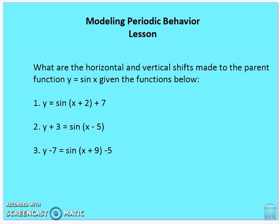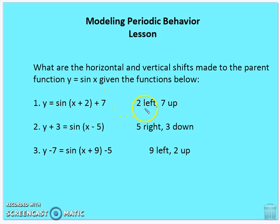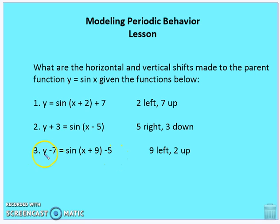I'm going to pause here while you complete this exercise. The graph shifts 2 to the left and 7 up. Number 2 shifts 3 down and to the right 5. Number 3 shifts 2 up and 9 down.